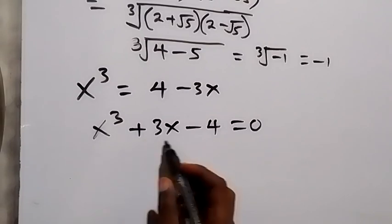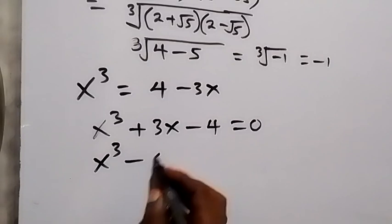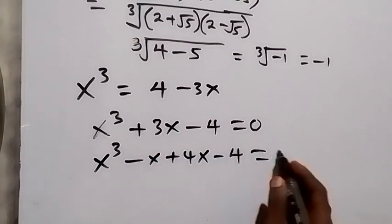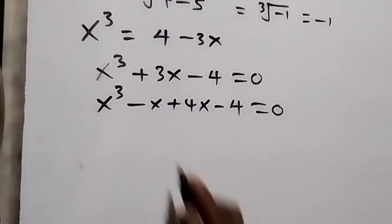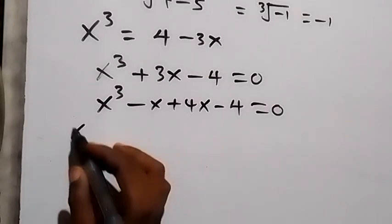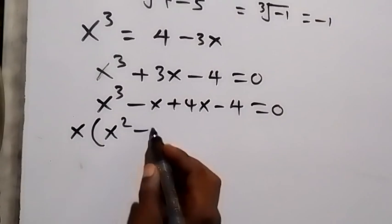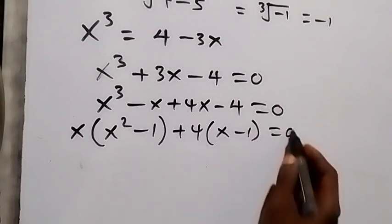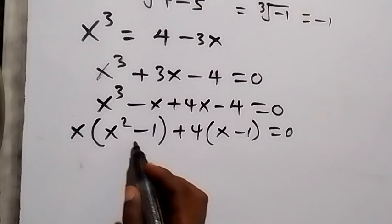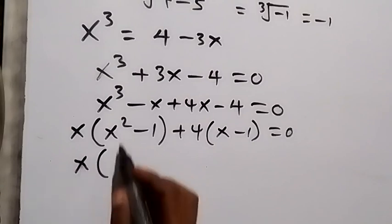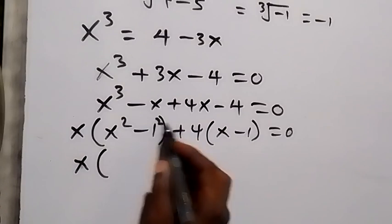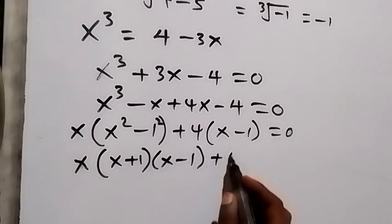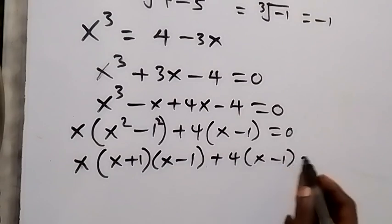We can rewrite 3x as −x + 4x to help factor: x³ − x + 4x − 4 = 0. Grouping in pairs, x is common in the first group giving x(x² − 1), and 4 is common in the second giving 4(x − 1). Using difference of two squares, x² − 1 = (x + 1)(x − 1), so we get (x + 1)(x − 1) + 4(x − 1) = 0.